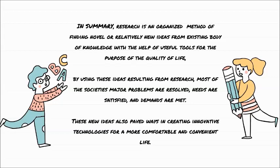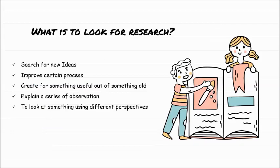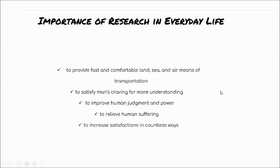Because of research, many things have improved and life has become more convenient for everyone. So to recap what we look for in research: search for new ideas, improve certain processes, create something useful out of something old, explain a series of observations, and look at something using a different perspective. Some researchers improve existing research because perspectives differ — what one person wants may differ from another's viewpoint.